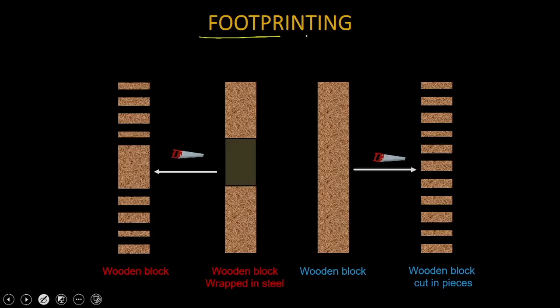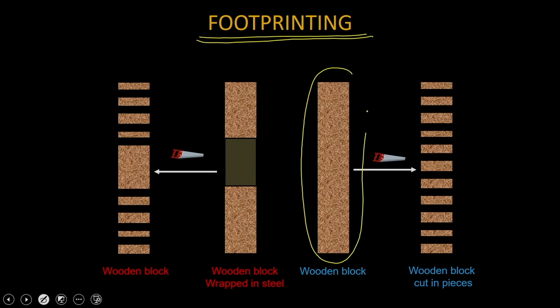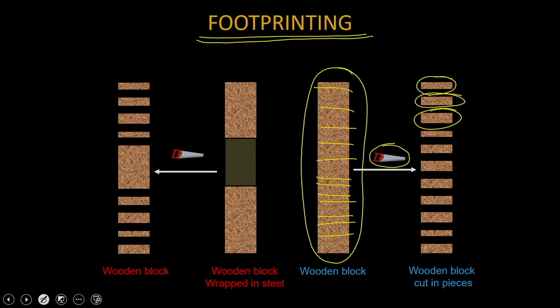That can be done by footprinting. Before discussing footprinting, let me tell you how the idea of footprinting came. You can have two wooden blocks — take one wooden block and use a cutter to cut it into multiple pieces. You are going to get multiple pieces with no issues because there is no protection present on this wooden block.